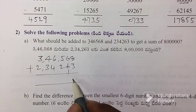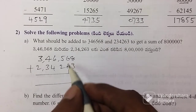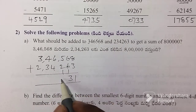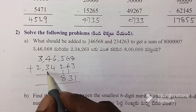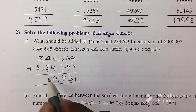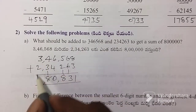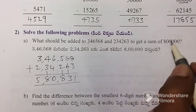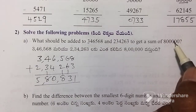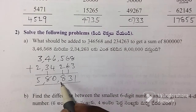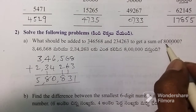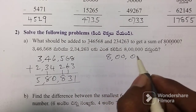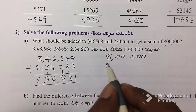Add. So, 8 plus 3 is 11. 6 plus 6 is 12, plus 1 is 13. 5 plus 2 is 7, plus 1 is 8. 6 plus 4 is 10. 4 plus 3 is 7, plus 1 is 8. 3 plus 2 is 5. 5,80,820. Here is the time that I can add the value of 8,081. This is the value of 8,081.